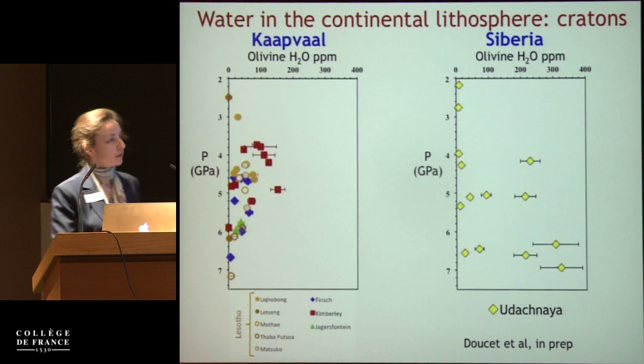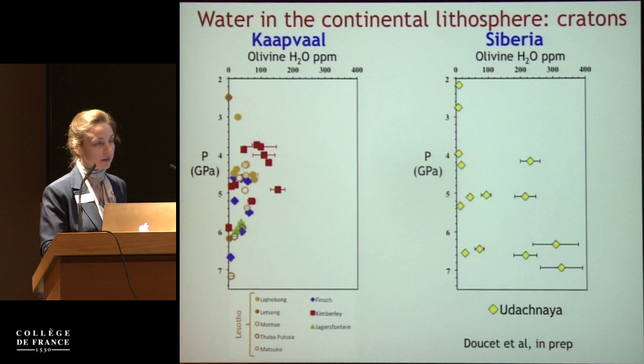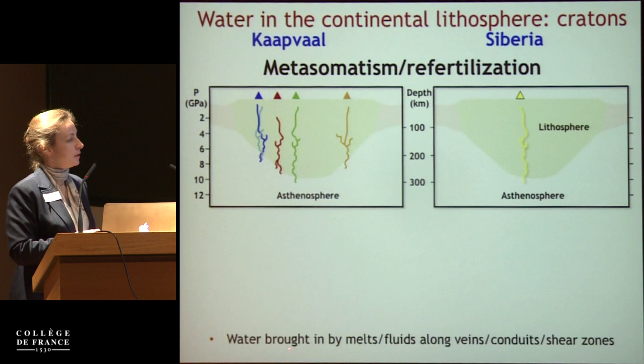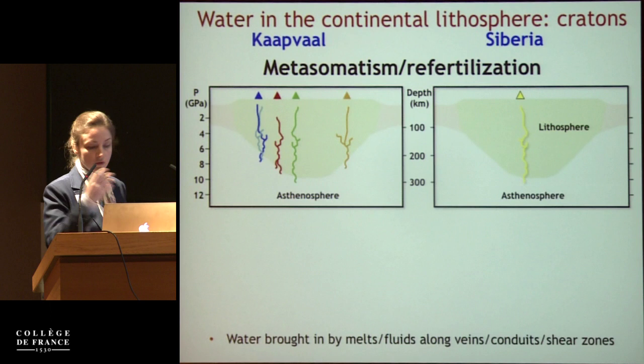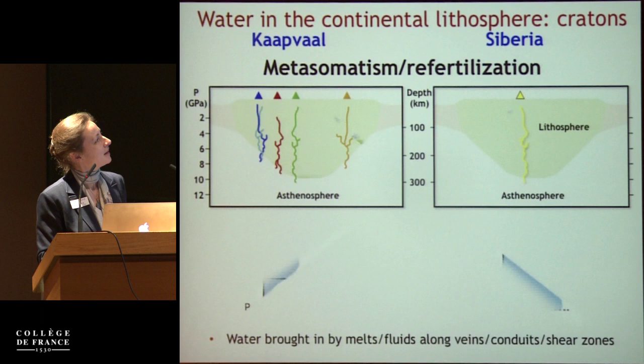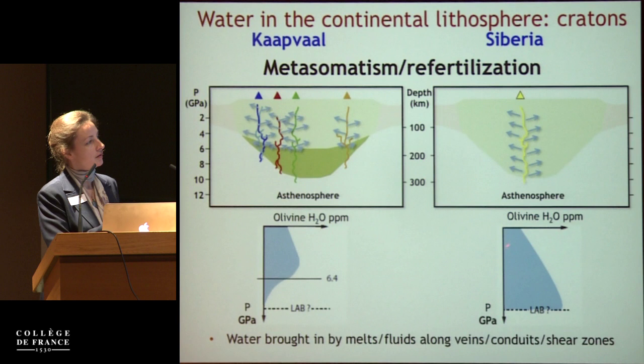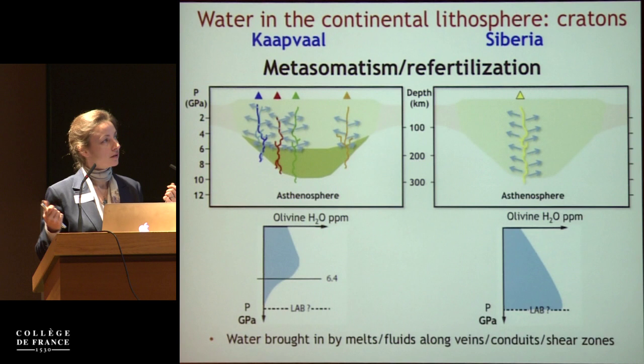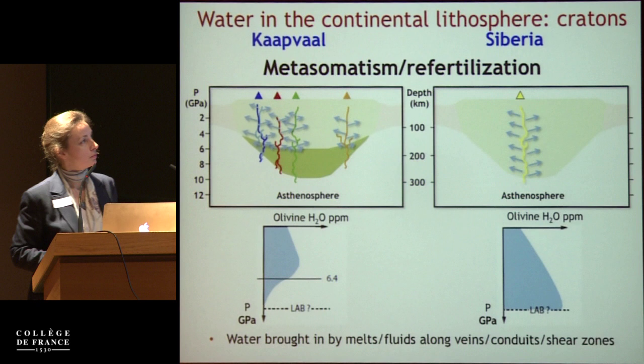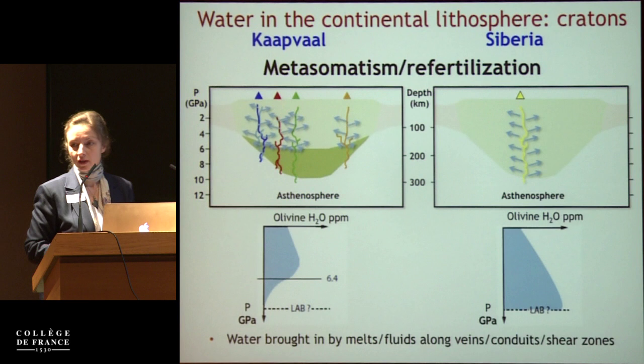So we return to comparing Kaapvaal and Siberia. Water has been brought in by melts and fluids circulating through the mantle, yet the water content profiles in olivine with depth are very different. In Siberia, water is released by metasomatic events at all depths of the cratonic root, whereas in Kaapvaal water enrichment occurs only at the shallowest levels.